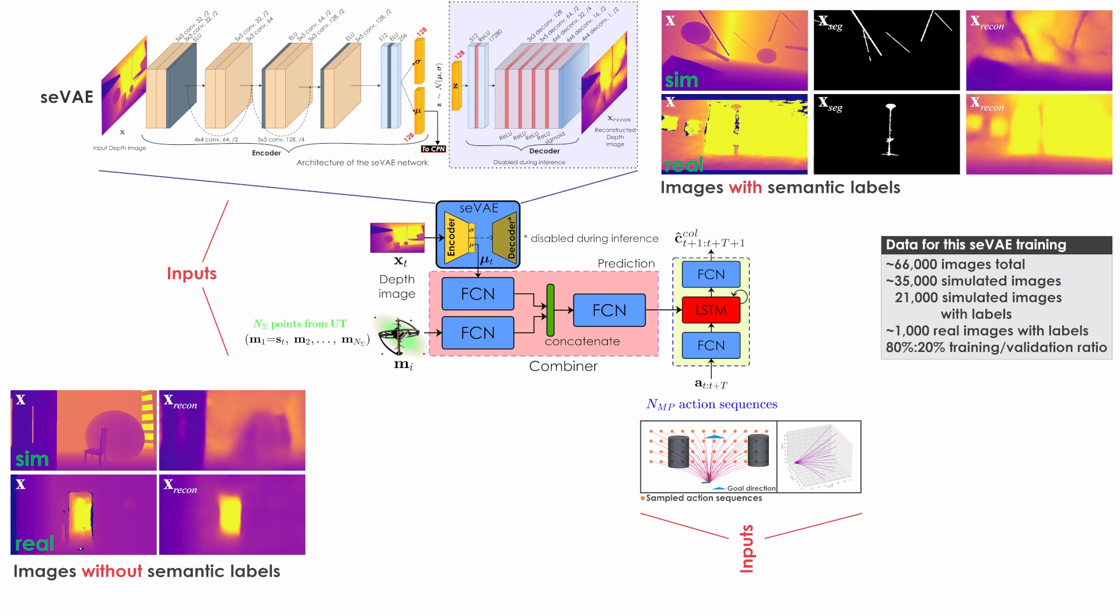We show that a complex depth image with a typical resolution of 270 by 480 pixels can be sufficiently represented by a highly compressed latent representation, namely of 128 variables, while preserving features from hard-to-perceive thin obstacles by exploiting semantic labels in simulated data and real-depth images, when available.